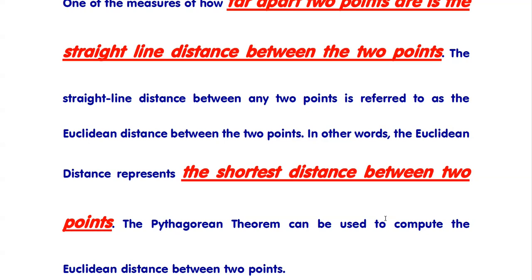The Pythagorean theorem can be used to compute the Euclidean distance between any two points. In other words, we can say that Euclidean distance is used to find the distance between any two points and we can do this with the help of Pythagorean theorem.